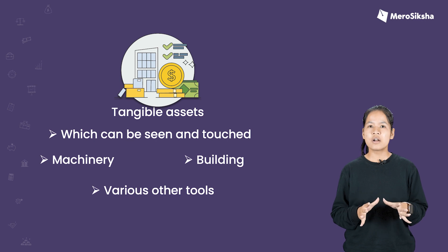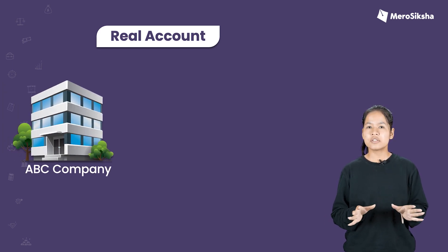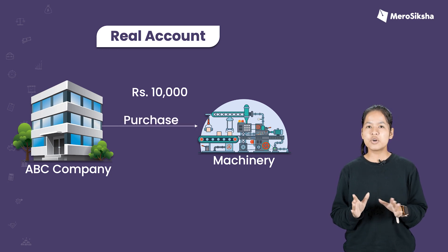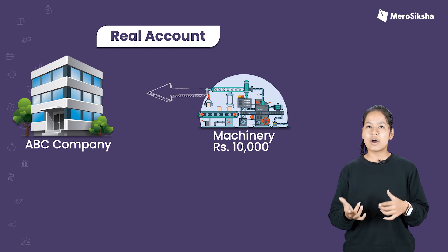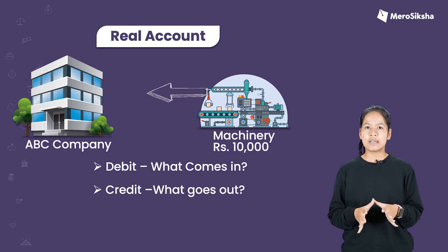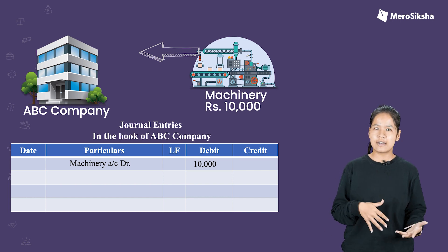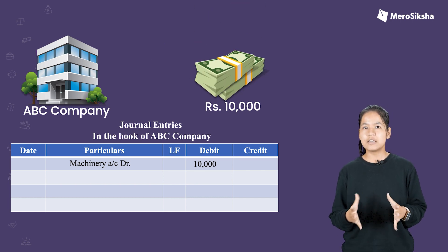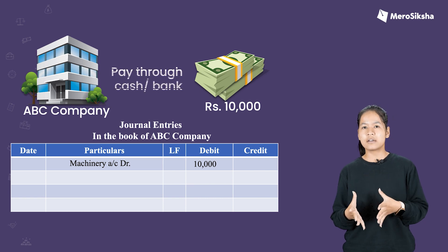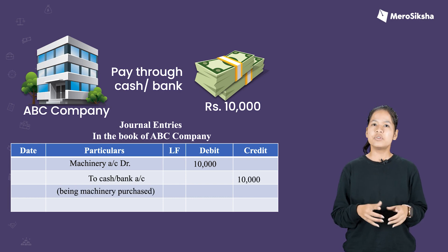Now, how do you make a journal entry for a real account? Let's take an example. In this case, you purchase $10,000 worth of machinery. The rule is: debit what comes in, credit what goes out. From the point of view of the business, machinery is coming in, so the debit side is the machinery account. This is our real account.